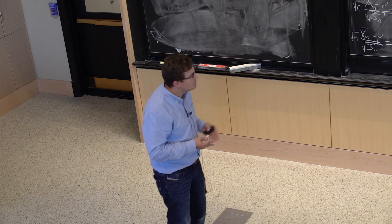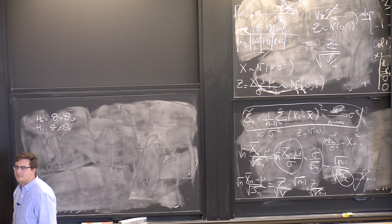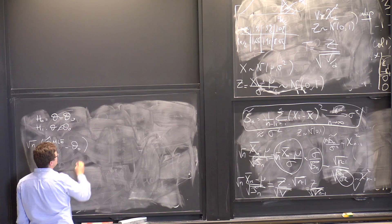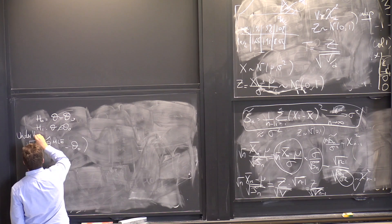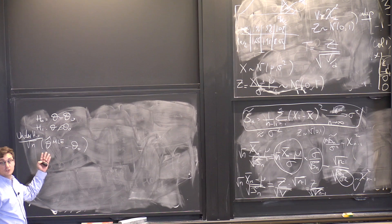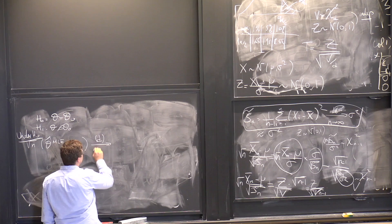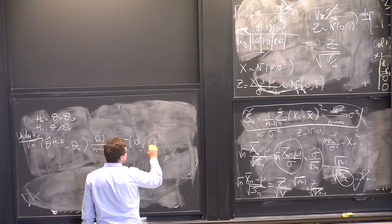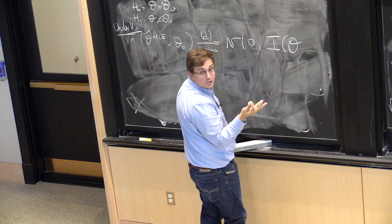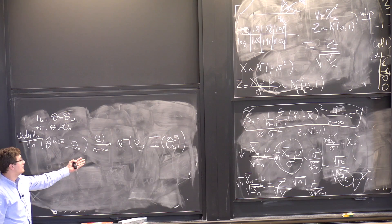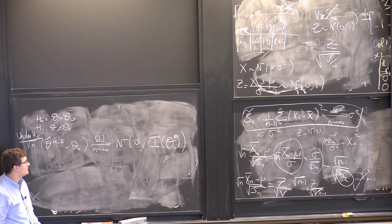Under H0, the theorem says that sqrt(n) * (theta_hat_MLE - theta_0) converges in distribution to N(0, I(theta_0)^{-1}), where I(theta_0) is the Fisher information matrix at theta_0. This is the limiting theorem for the MLE. To convert this to a standard form, I pre-multiply by I(theta_0)^{1/2}, which is the matrix square root, analogous to dividing by sigma in the scalar case.